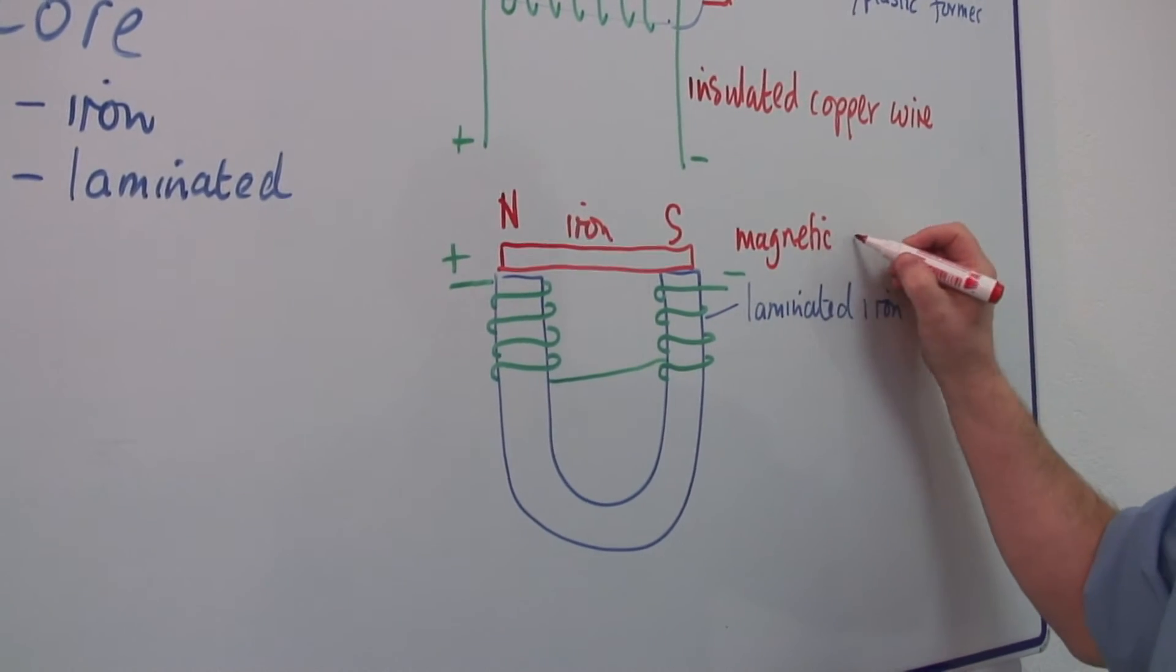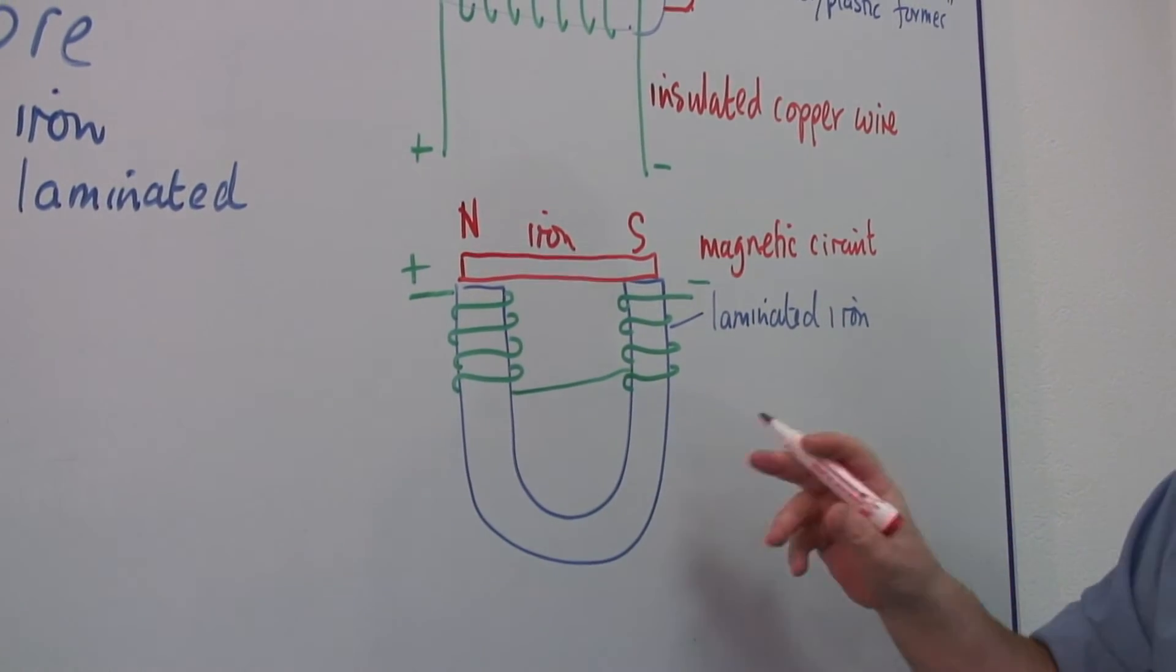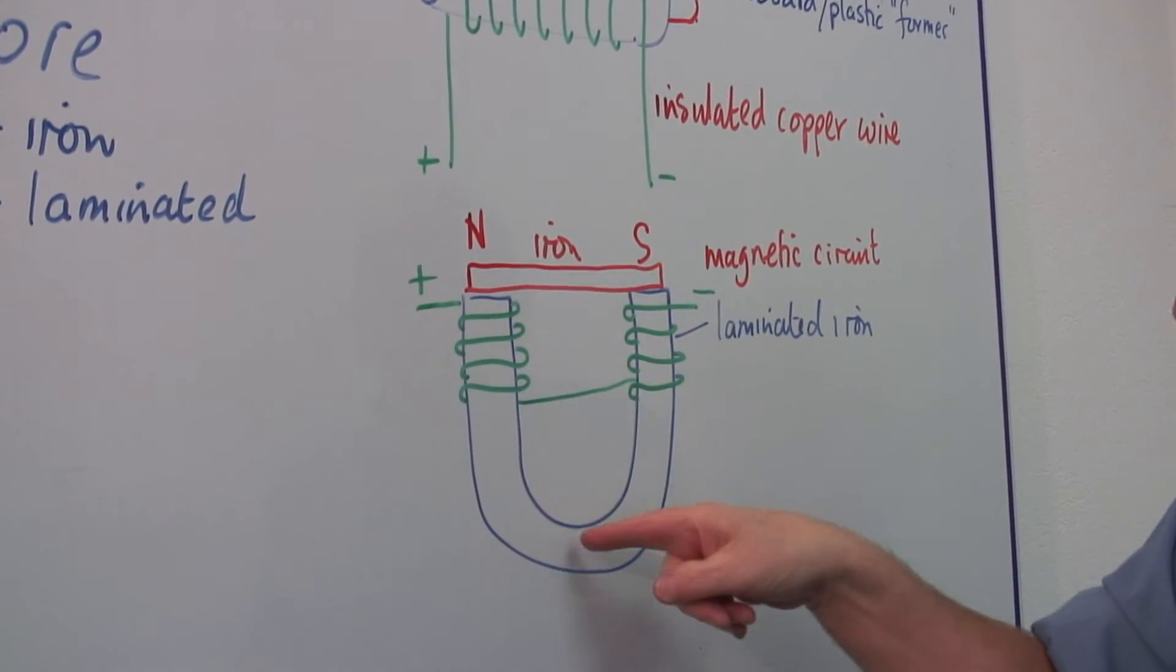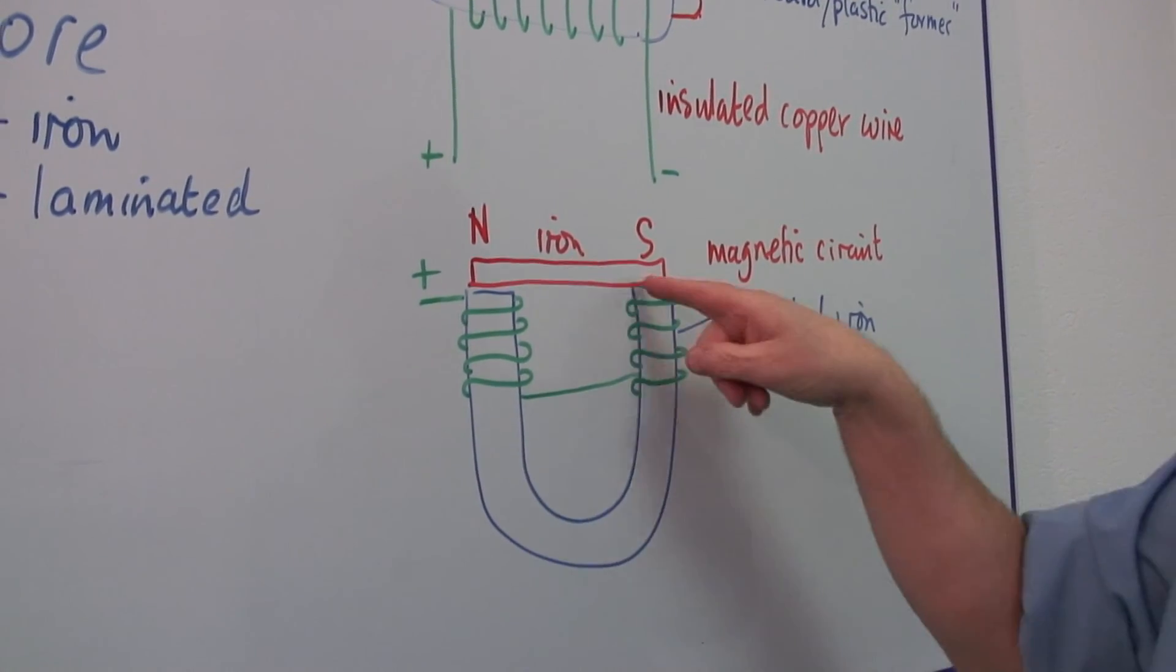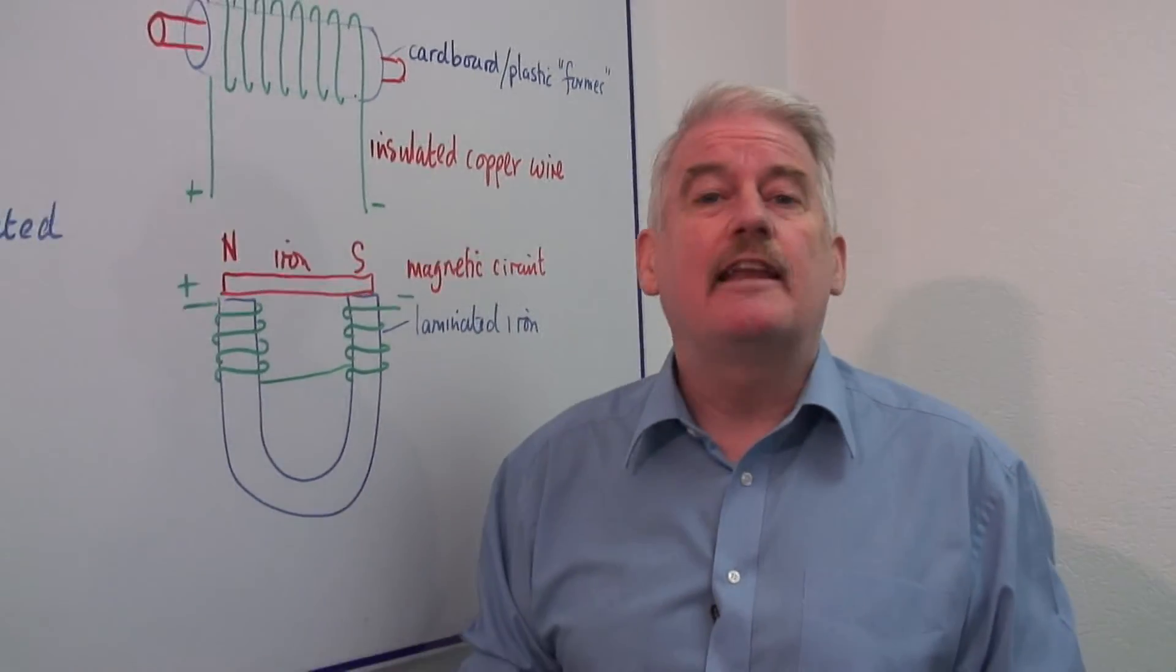And this is a very effective way of making an electromagnet. The magnet is very strong. You don't lose any of the magnetism. It is channeled through this iron in here. So that is basically how to create an electromagnet.